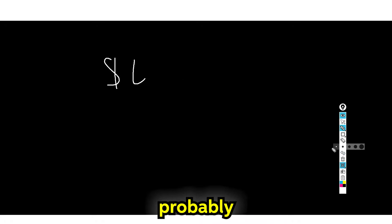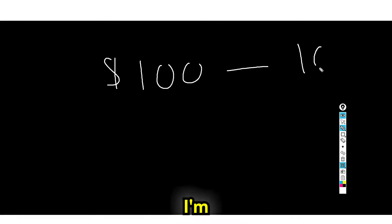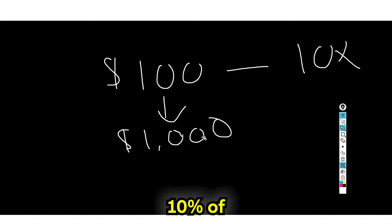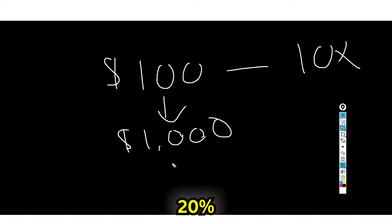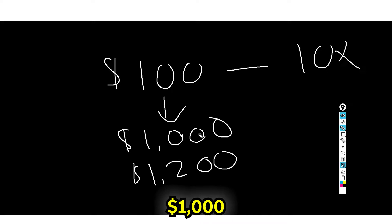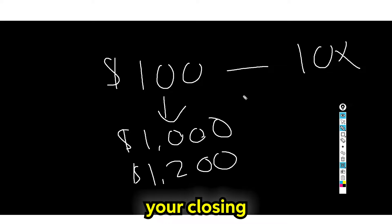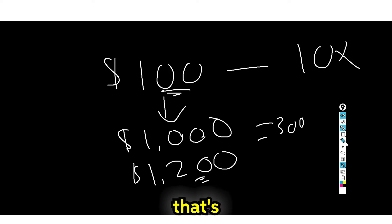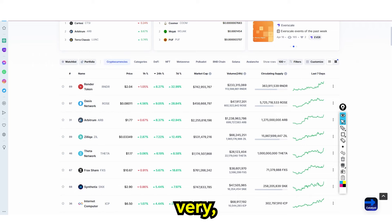Let me explain it again with $100. If you've got $100 and you do 10x leverage, you now have access to $1,000. If Bitcoin goes up 20%, your $1,000 goes up 20% to $1,200. But remember, you only started with $100 — you borrowed $900, your position is now $1,200, which means you've profited $200. Close your position, you get your $100 back plus the $200 profit — so now you've made $300. That's why leverage trading is so lucrative.